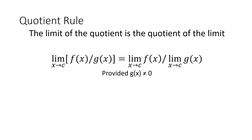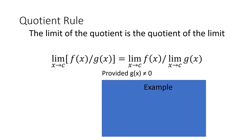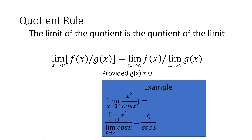The quotient rule says that if I'm dividing two functions, I can find the limit of the numerator, find the limit of the denominator, and then divide the two, as long as the limit of g(x) is not equal to zero. So if I have x² over cos(x) and I'm taking the limit as x approaches 3, that's the limit of x², which gives us 9, over cos(3).